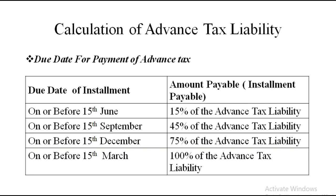Before solving the sum, there is one table that needs to be learned. The table heading is 'Due Date for Payment of Advanced Tax.' On or before 15 June, the installment payable is 15% of advanced tax liability. On or before 15 September it is 45%, on or before 15 December it is 75%, and on or before 15 March it is 100% of the liability.